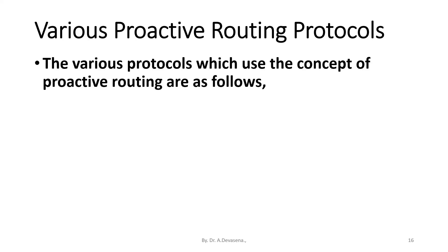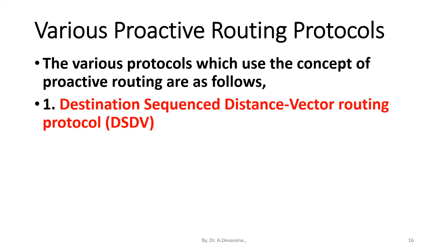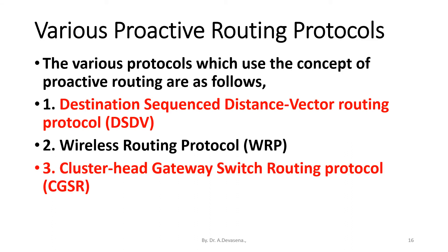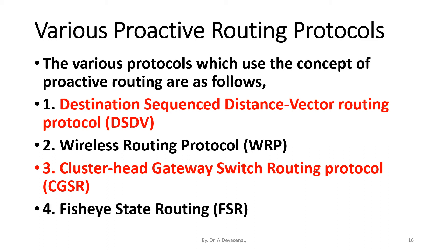The various protocols which use the concept of proactive routing are as follows: first is Destination Sequence Distance Vector routing protocol (DSDV); second is Wireless Routing Protocol (WRP); third is Cluster Head Gateway Switch Routing protocol (CGSR); and fourth is Fish Eye State Routing.